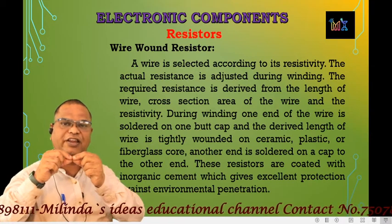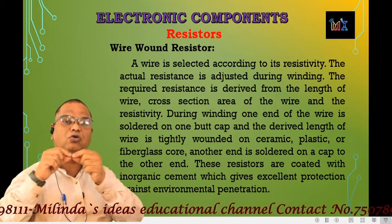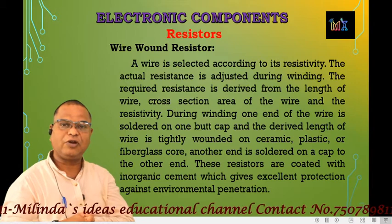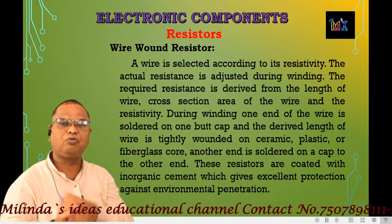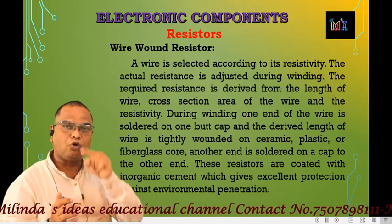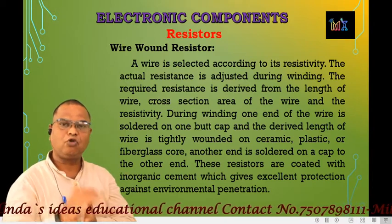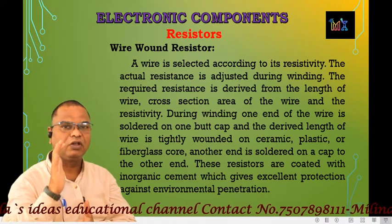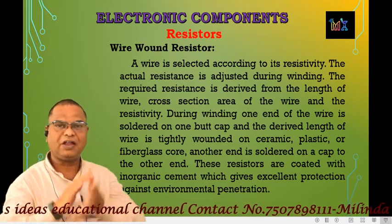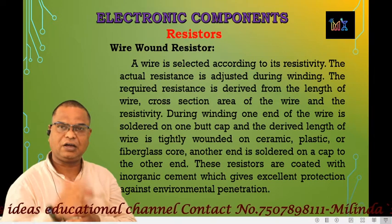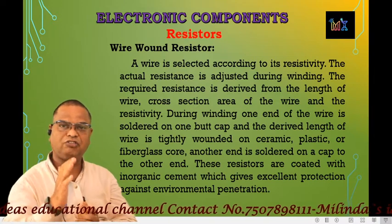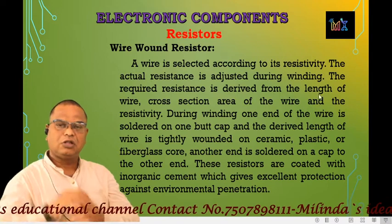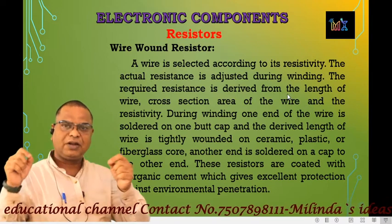The wire is selected according to its resistivity. The formula is R equals rho times L divided by A. Rho means specific resistance, that is resistivity. Once the material is chosen, the resistivity is fixed, and the resistance value is determined by the length and cross-sectional area.